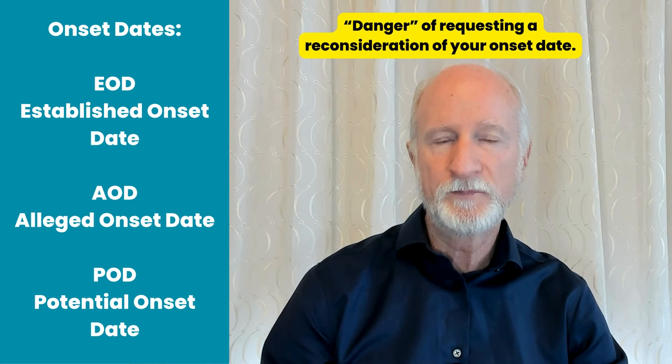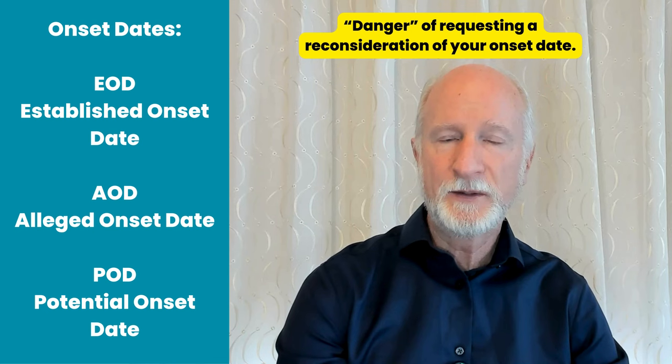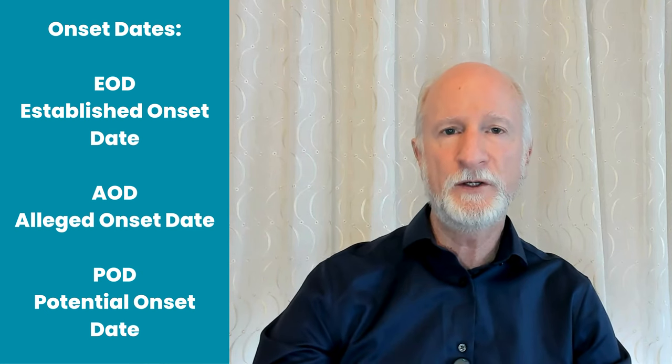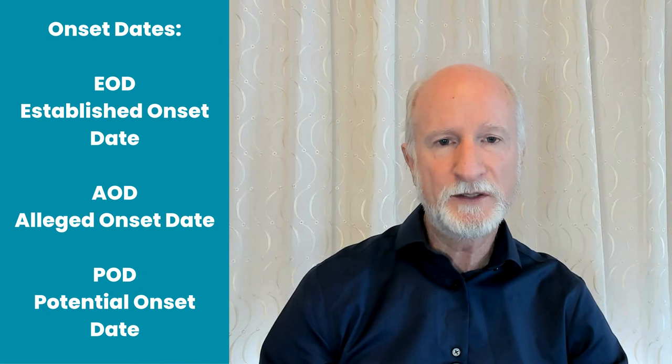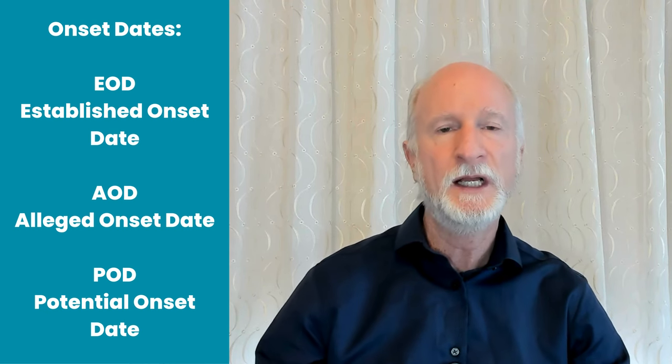When you request a reconsideration of the onset date, it goes through the entire process again. They send it back to the Disability Determination Services and a second set of eyes looks at everything. That reviewer might say, 'Why was this person approved in the first place?' — and not only agree with the later onset date but reverse the approval entirely. So you have to be aware that requesting a reopening based on the onset date carries real risks.